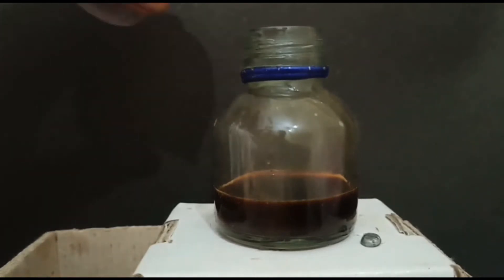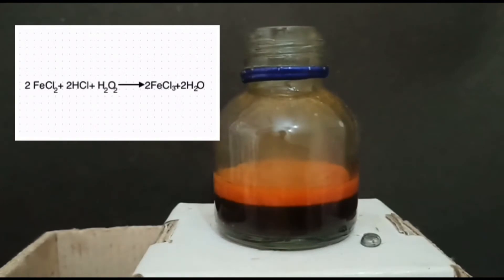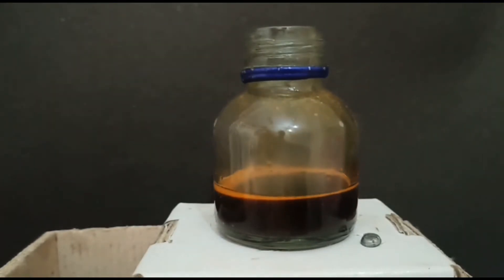As soon as the hydrogen peroxide is added, it reacts with the ferrous chloride to make ferric chloride, or iron tree chloride, which has a red to black color.